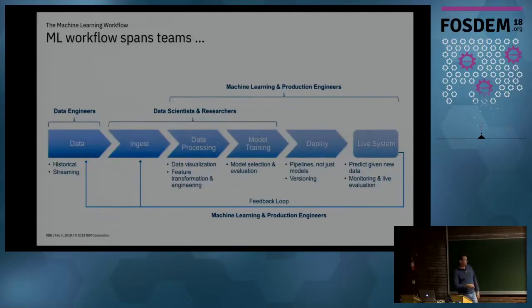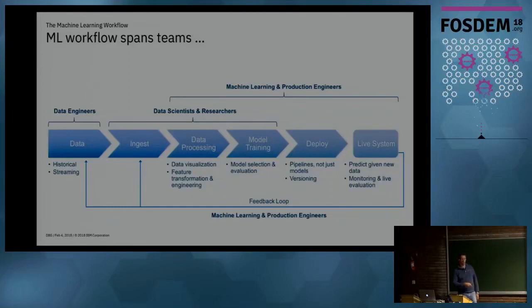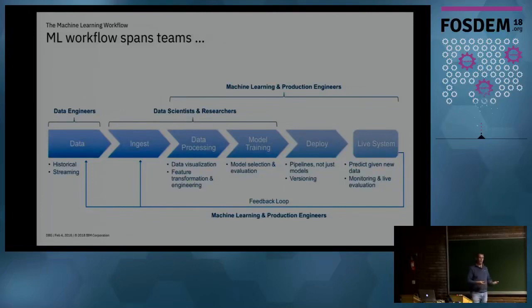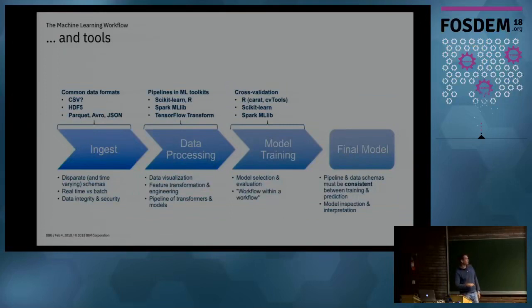It's not just the models you need to deploy — you need to deploy the entire workflow of pre-processing steps, feature engineering, and data cleaning. You've got to worry about versioning: which version are you deploying, have features changed since the last version? Once in production, the system needs to predict on new data, monitor performance, do live evaluation, and feed results back into a feedback loop that connects back to your historical and streaming data pipeline.